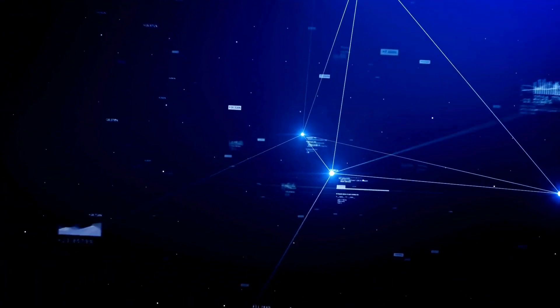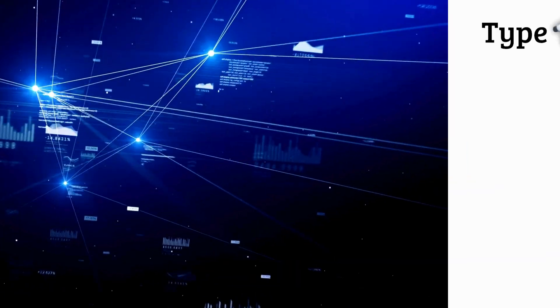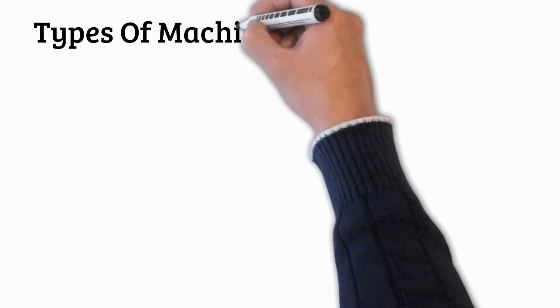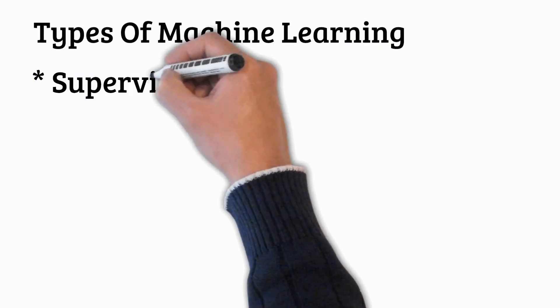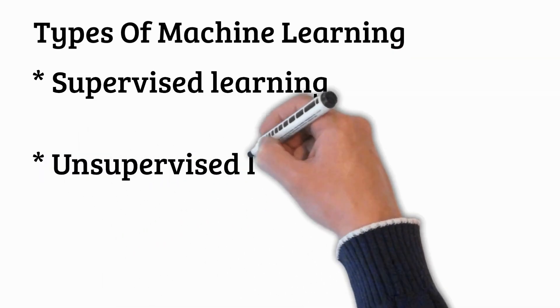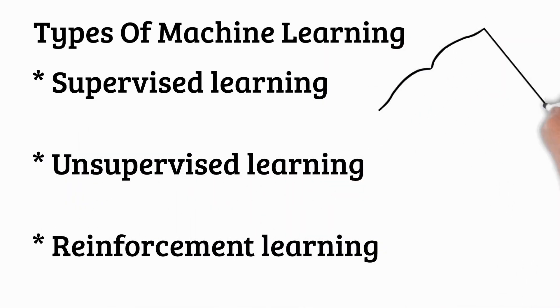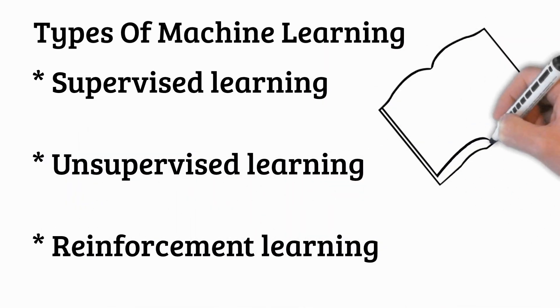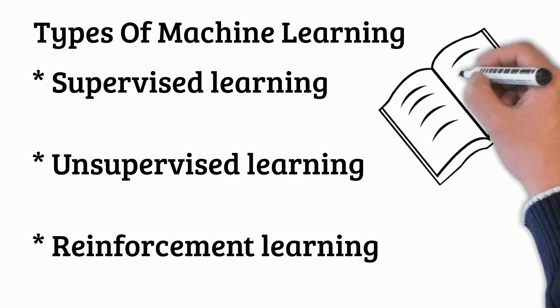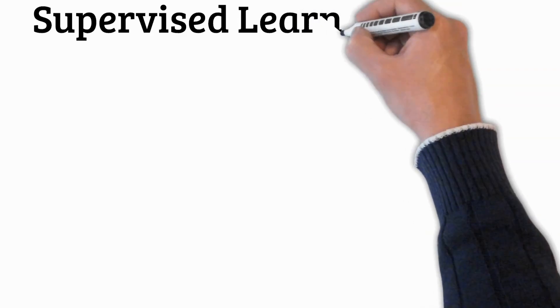Now that we know what machine learning is, let's take it a step further and break it down into the three main types: supervised learning, unsupervised learning, and reinforcement learning. Let's take a deeper look into each. First up, supervised learning.